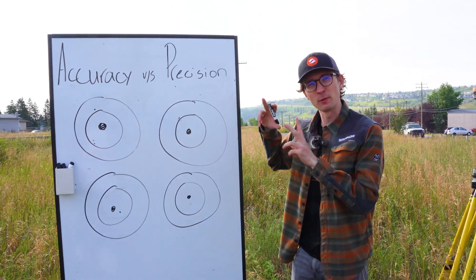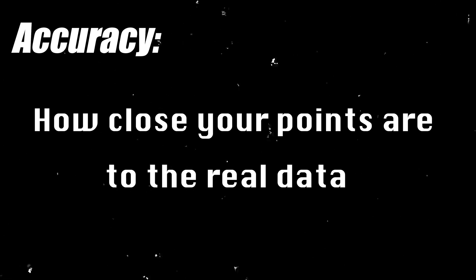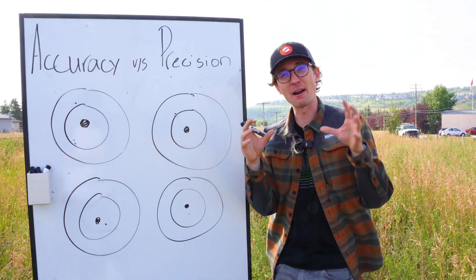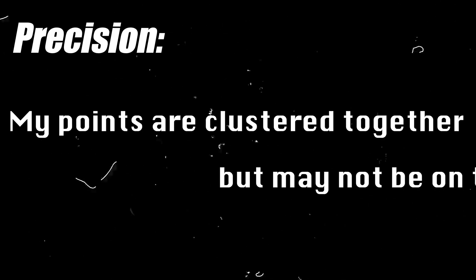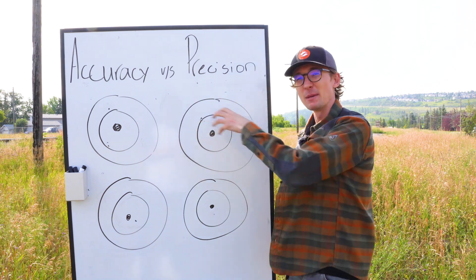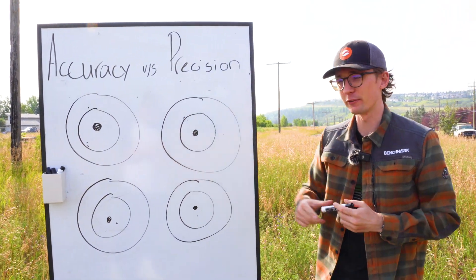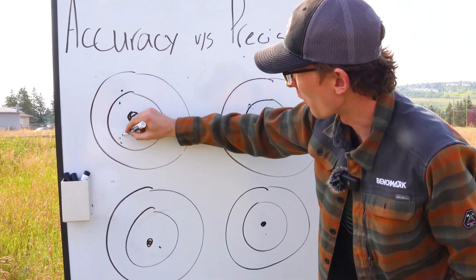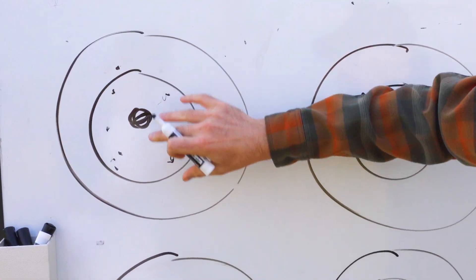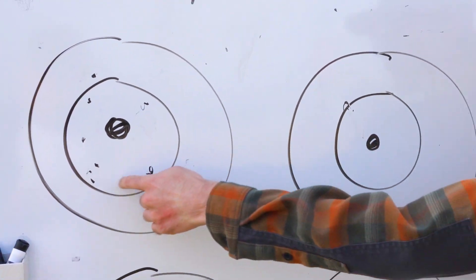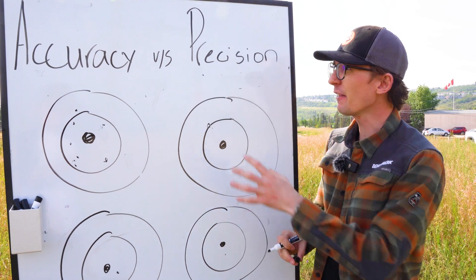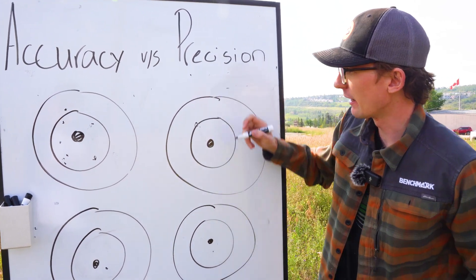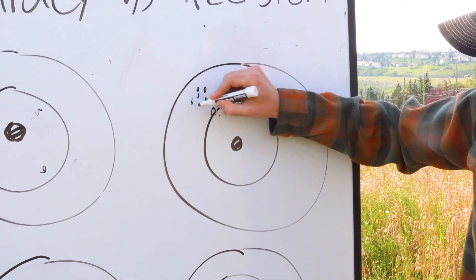Accuracy is how close your points are to the real data. So if I have a value of zero, all my points are going to average out to zero. If I am precise, my points are going to be clustered very close together, but they may not be on the true value — so there may be an offset. So if I'm throwing some darts at this dartboard here, if I am accurate but not very precise, my points are all going to be around the bullseye, but they're not necessarily going to be very close together — there's quite a bit of variation. On the other hand, if I'm very precise but not very accurate, I'm going to have all my points clustered together, but there's going to be an offset.